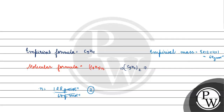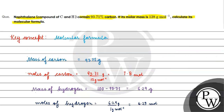The molecular formula is (C5H4)₂, which gives us C10H8. That is the molecular formula for the compound. I hope you understood it well. Thank you and all the best.